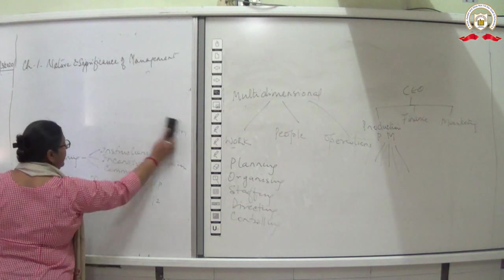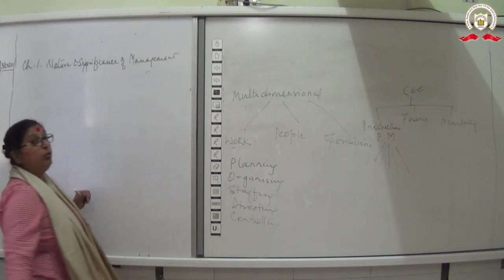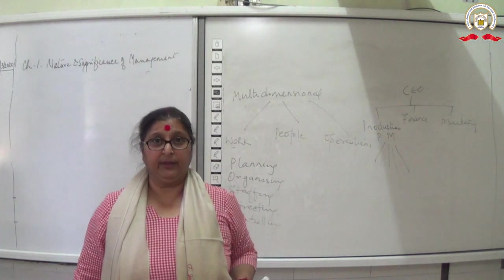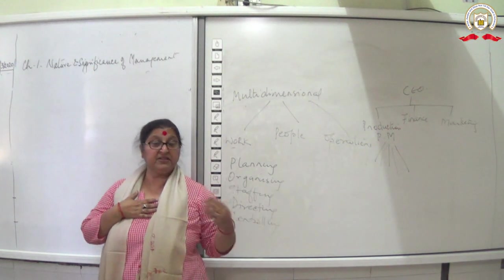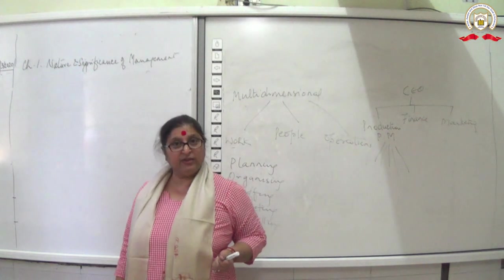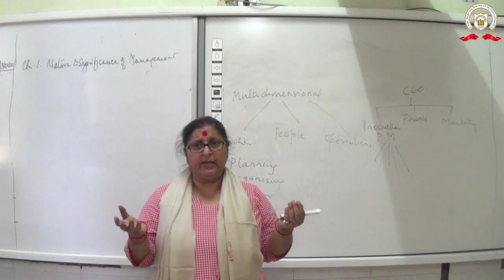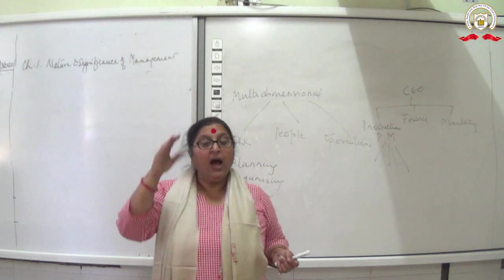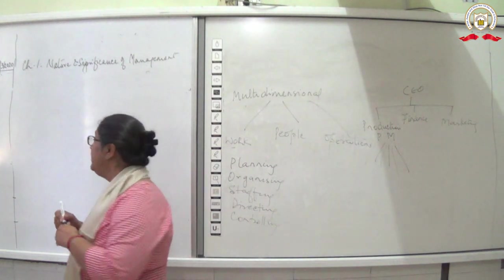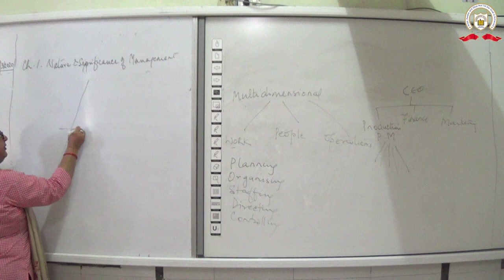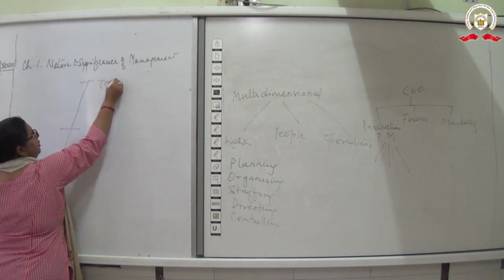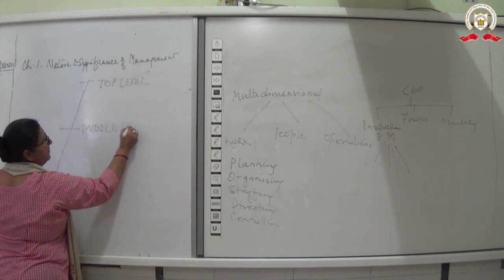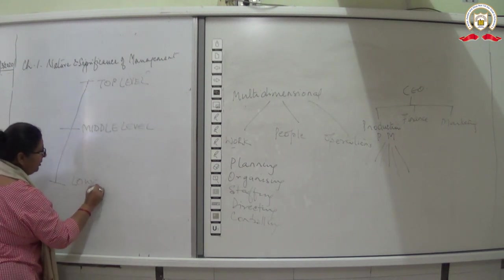Now let's move to levels of management. In an organization there are three levels. The first is the top level, the second is the middle level, and the third is the lower level. Different designations correspond to different levels.